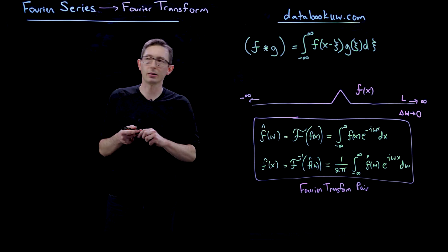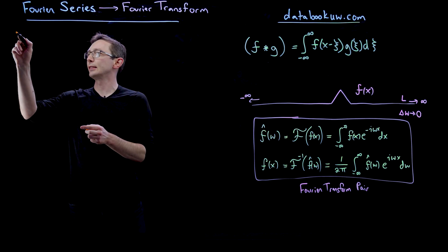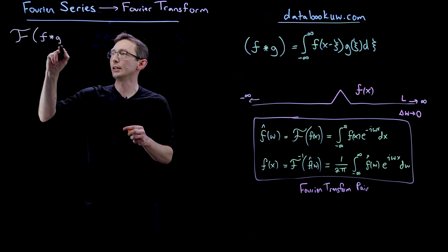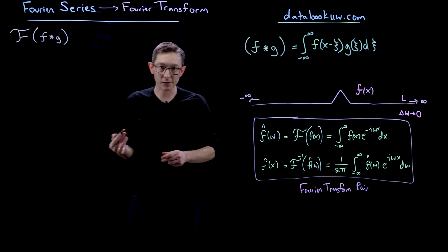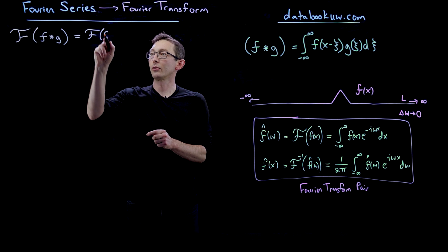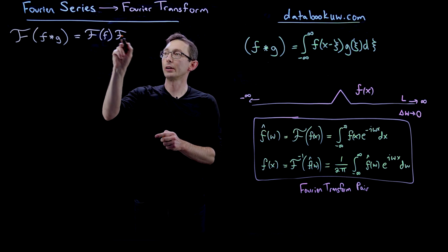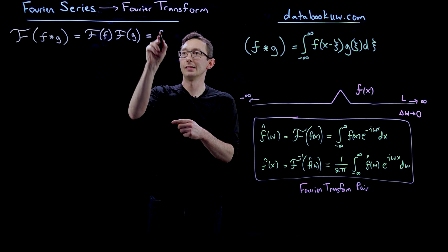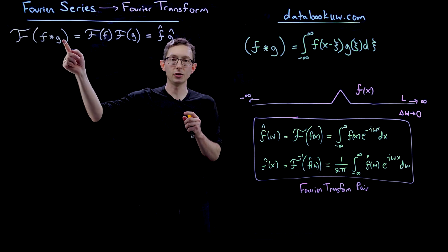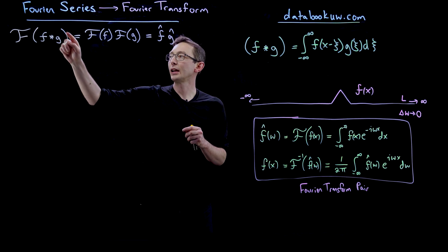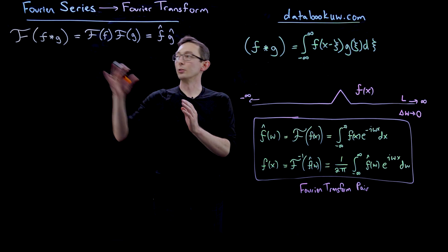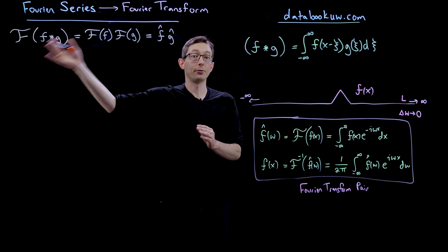The way it simplifies is as follows. If I have the convolution f star g and I Fourier transform that convolution, that is equal to just the regular old product of the Fourier transform of f times the Fourier transform of g — or you can write it as f-hat times g-hat. So convolutions become products through the Fourier transform.